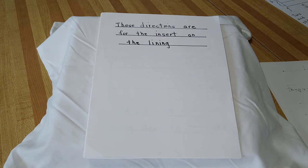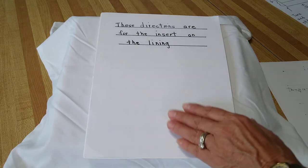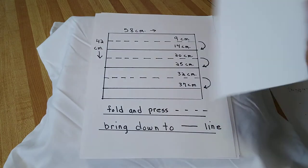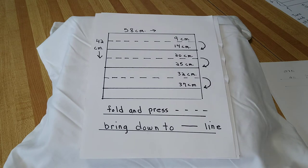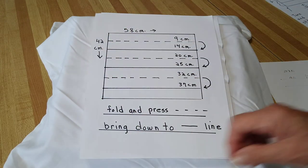These directions are for the insert on the lining. The piece that is 58 centimeters by 42 centimeters.